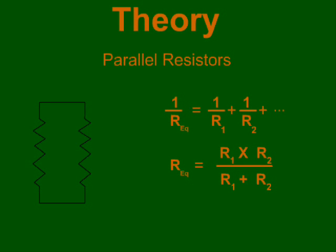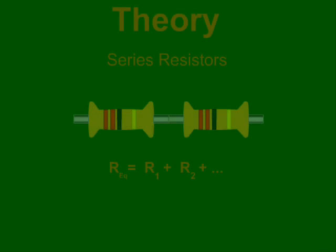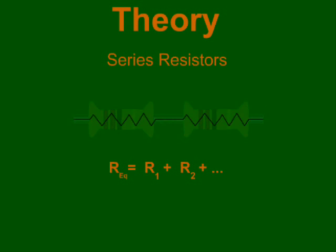Equivalent parallel resistance can be calculated by dividing the product of resistances by the sum of resistances. Equivalent series resistance can be calculated by finding the sum of the resistances.